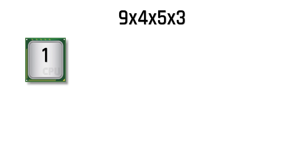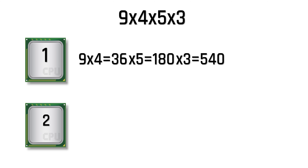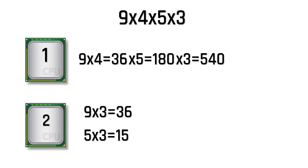For example, let's think a CPU has to solve the mathematical problem 9×4×5×3. A CPU with only one core will perform this task sequentially: first 9×4=36, then 36×5=180, then 180×3=540. But if you give the same task to a CPU with two cores, it performs very differently — one core does 9×4=36, and at the same time, the other core does 5×3=15.